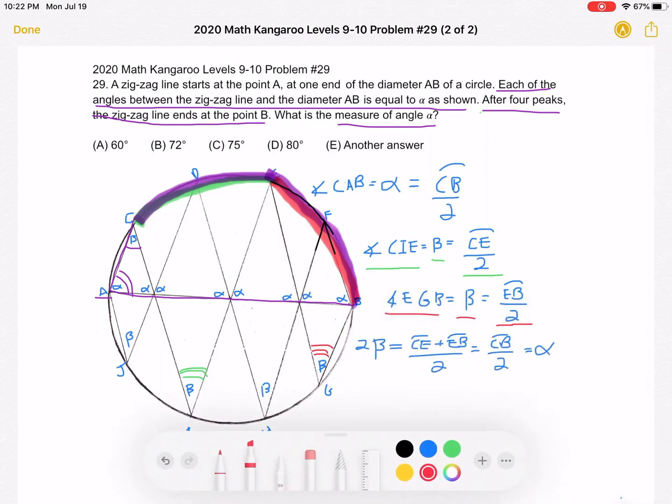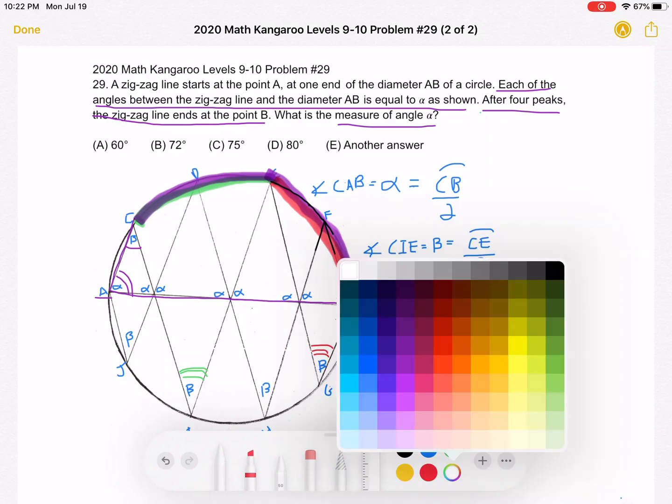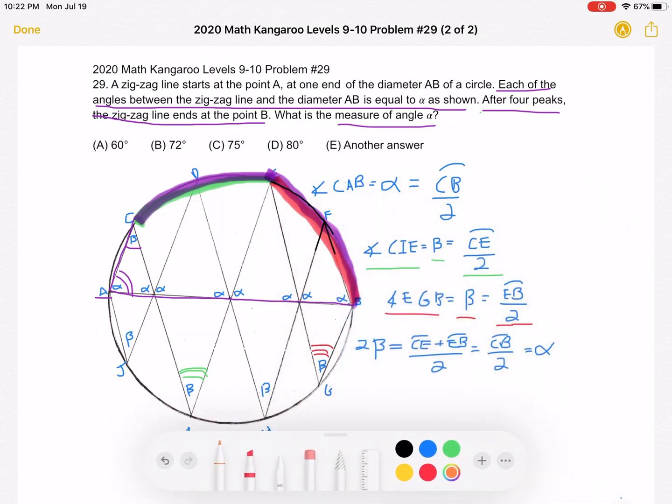If we add, let's find a new color. So if we add this beta plus beta, we have 2 beta. And we can write this as the sum of arc CE over 2 plus arc EB over 2. That is this sum right here.